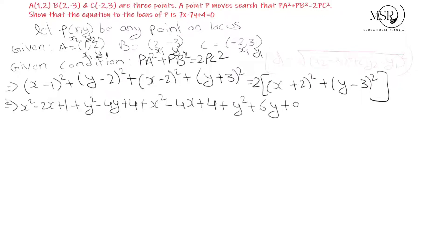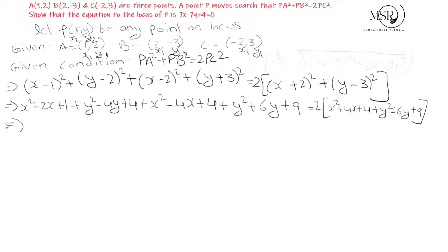Expanding the right-hand side: 2PC² = 2 × [(x + 2)² + (y - 3)²]. Expanding (x + 2)² = x² + 4x + 4, and (y - 3)² = y² - 6y + 9. Collecting x² and y² terms on the left-hand side gives 2x² + 2y².